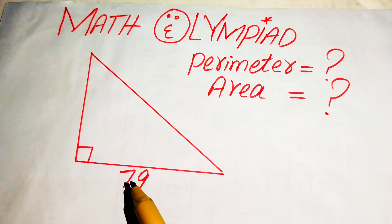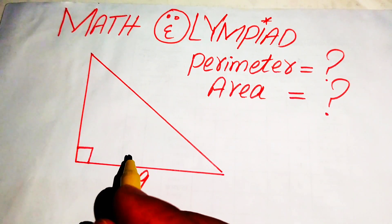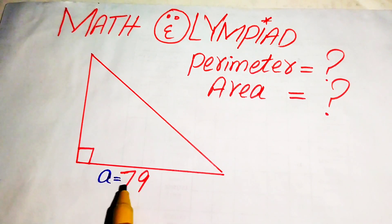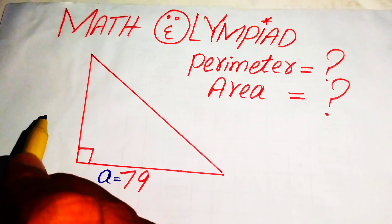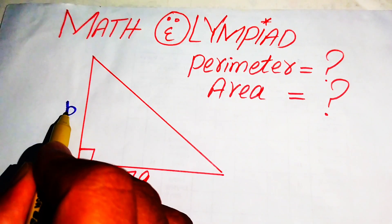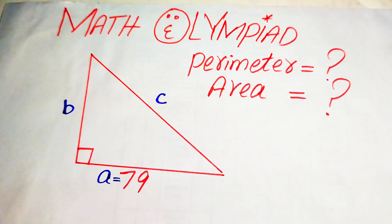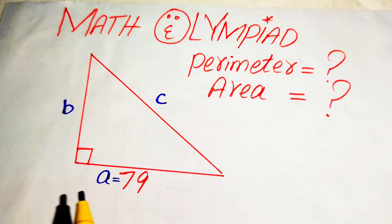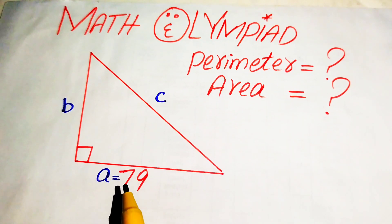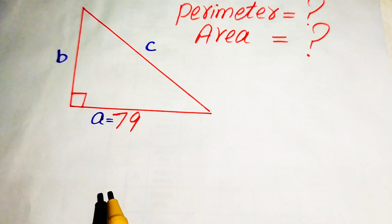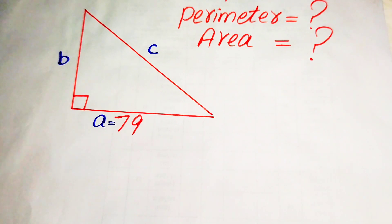We denote the sides by small a, b, and c — so this side length is denoted by a, this side length is denoted by b, and this side length is denoted by c. Because this is a right triangle, we use the Pythagorean theorem, which you know very well.